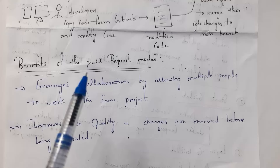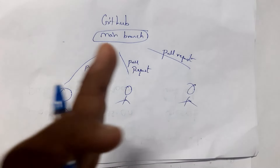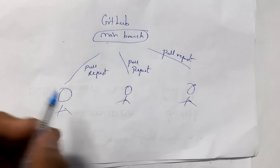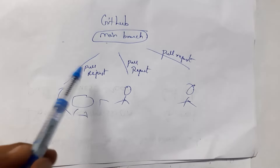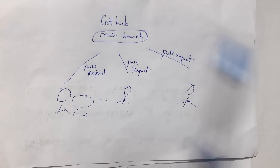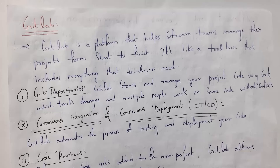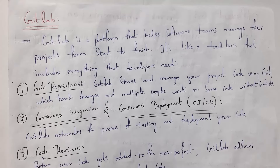The first benefit is encouraging collaboration by allowing multiple people to work on the same project. Multiple people can work on the same project in their own systems and send pull requests to the repository owner to place code in the main branch. Only if the repository owner accepts will the code be placed in the main branch. The next advantage is that code will be reviewed by the repository owner, so only quality code will be placed in GitHub.